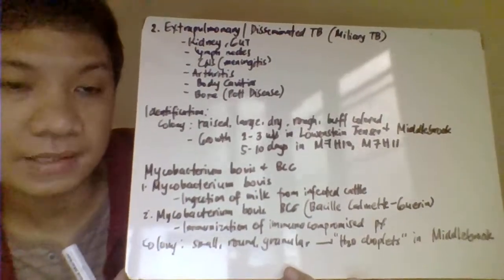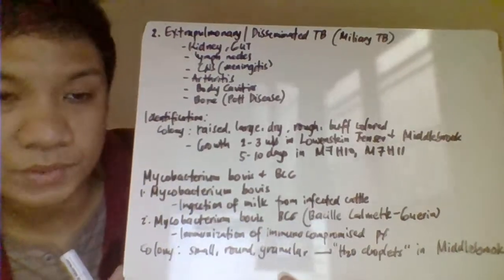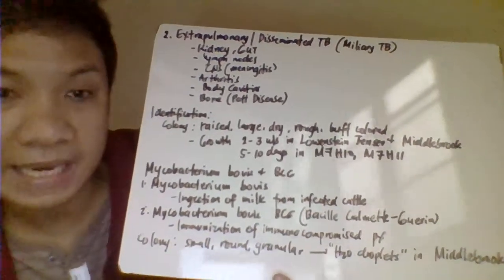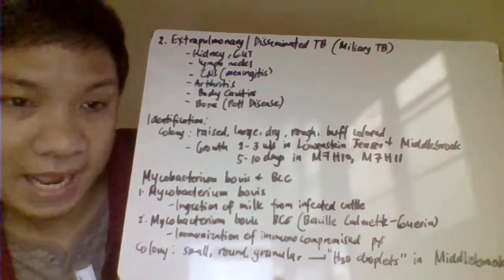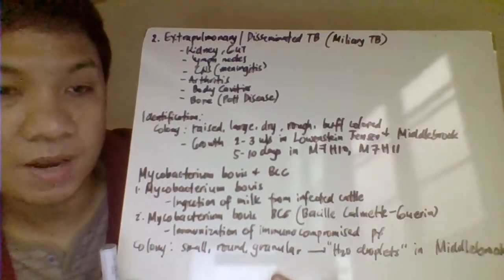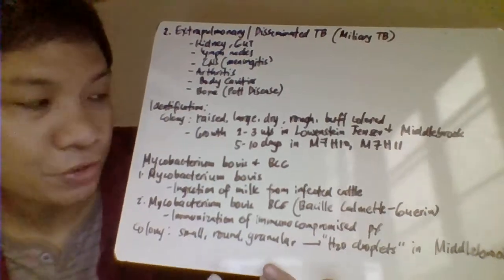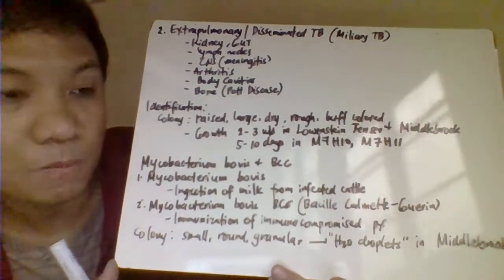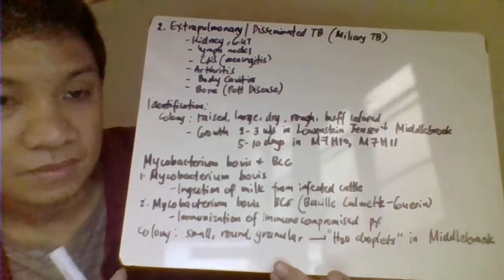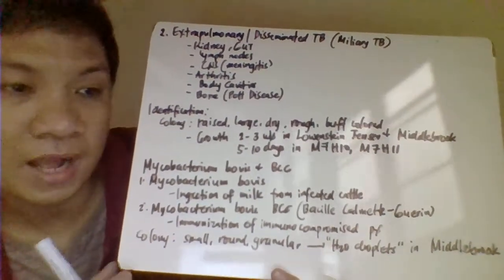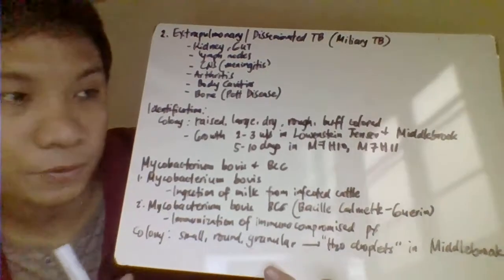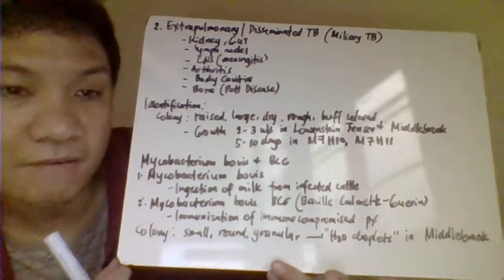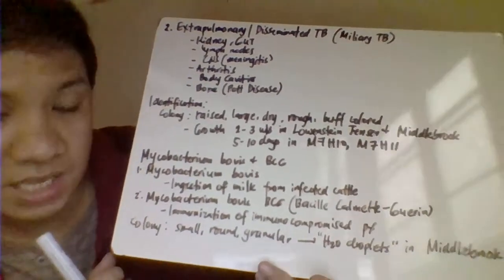The colony characteristics of Mycobacterium tuberculosis in culture media appear raised, large, dry, and buff-colored. It is able to grow on Lowenstein-Jensen (LJ) or Middlebrook media in two to three weeks. On specialized Middlebrook 7H10 or 7H11 media, it grows in five to ten days.